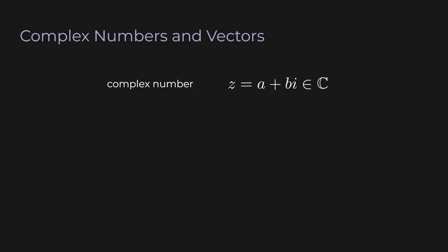Complex numbers — just a quick review in case you're rusty. A complex number z can be written as a plus bi, where a and b are real numbers and i is the square root of negative 1. a is called the real part, b is called the imaginary part. The complex conjugate of z, which we denote with a bar on top, is the same as z except the imaginary part is negated, so the conjugate of z is a minus bi.